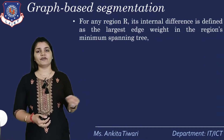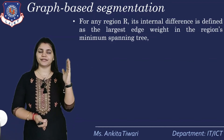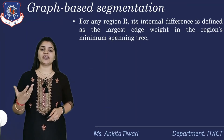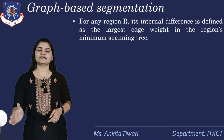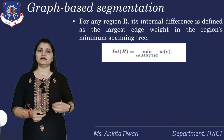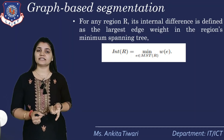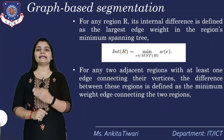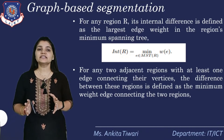For a region R, its internal difference is defined as the largest edge weight in the region's minimum spanning tree. The internal difference of R, denoted int(R), is defined as equal to the maximum weight E belonging to MST of R, with the W(e) property. So where any two adjacent regions have at least one edge connecting their vertices, the difference between these regions is defined as the minimum weight edge connecting the two regions.